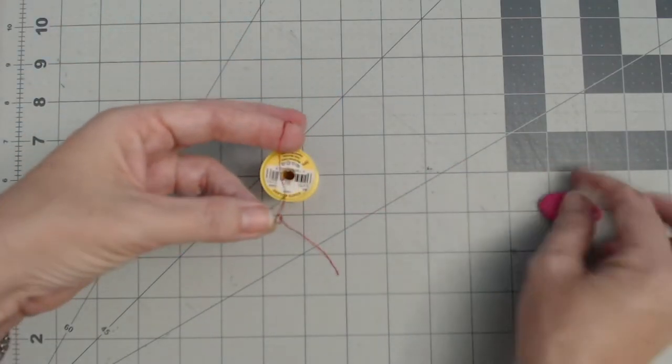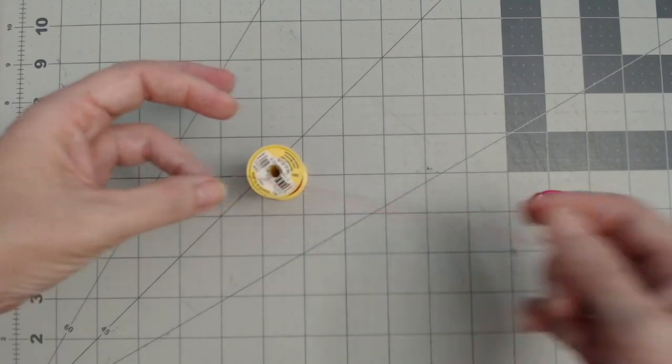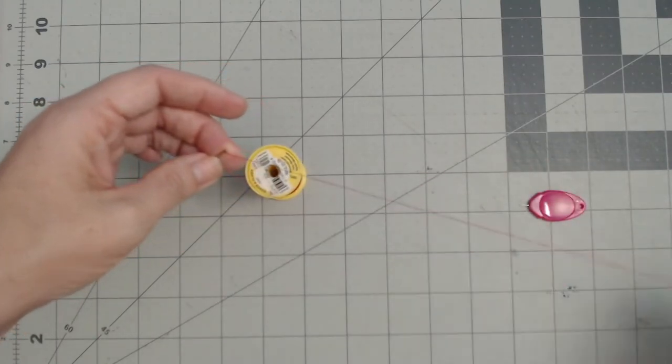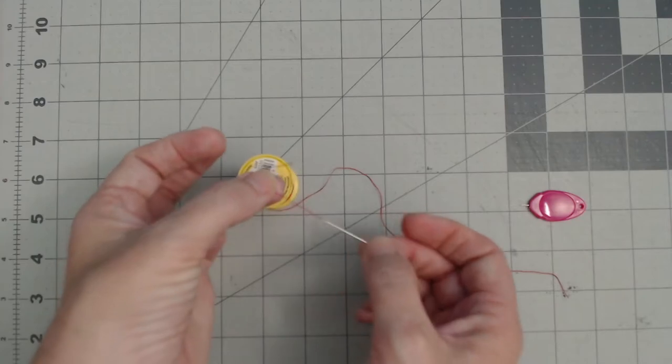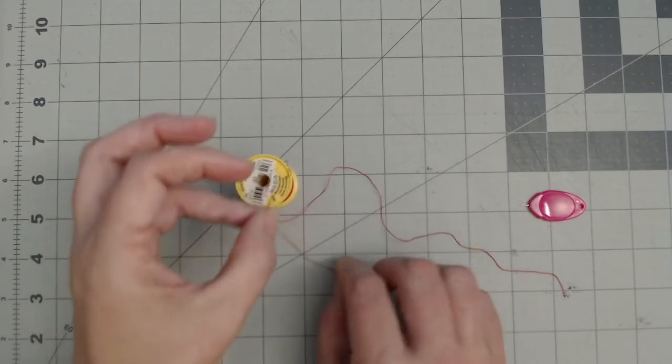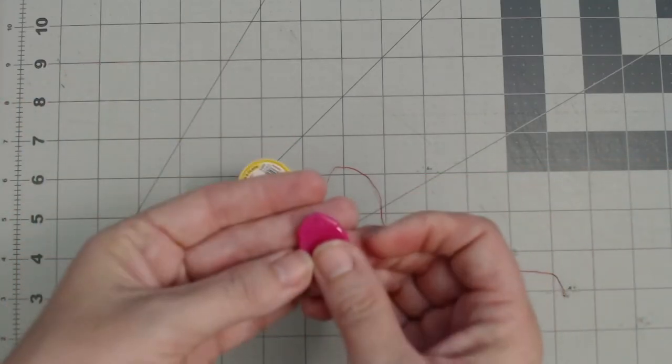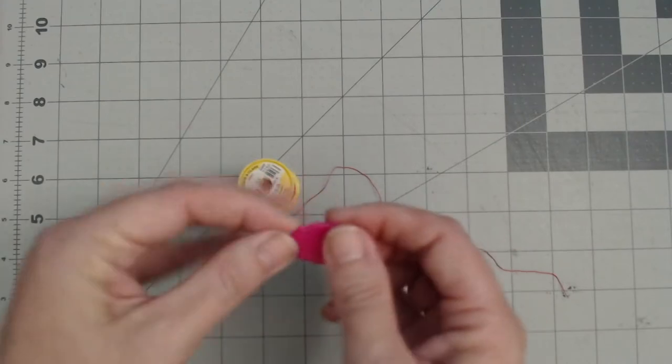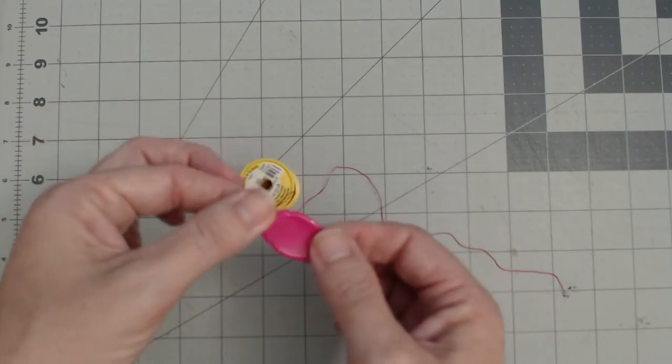So once you figure out how to use it without having three hands, it's pretty good. And it's not going to fall apart. The biggest issue I have with the little wire ones is the wire always ends up pulling out at some point.